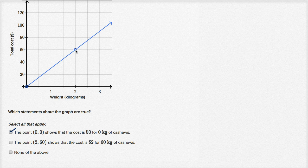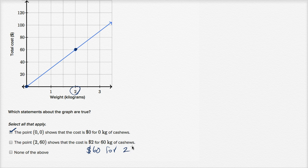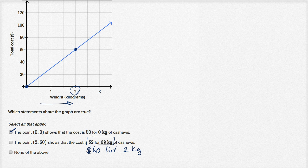The next statement: the cost is two dollars for 60 kilograms of cashews. No — this is showing us that the cost is 60 dollars for two kilograms of cashews. This axis is weight — measured in kilograms. So the horizontal coordinate gives you the mass of two kilograms, and the vertical coordinate gives you the cost of 60 dollars. It's 60 dollars for two kilograms, not two dollars for 60 kilograms. That would be an incredible deal — 60 kilograms is roughly what a medium-sized grown man weighs. Definitely rule that one out.